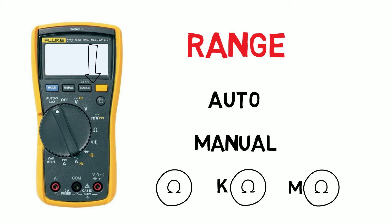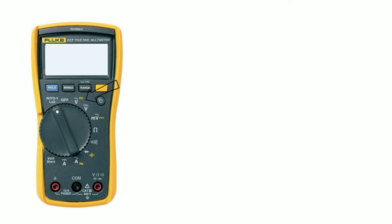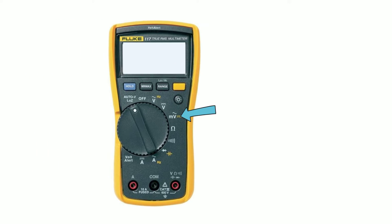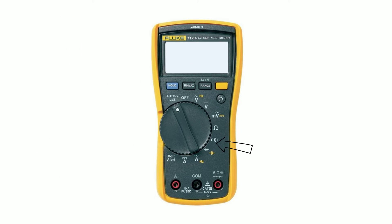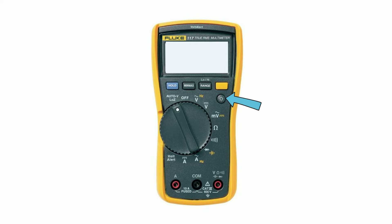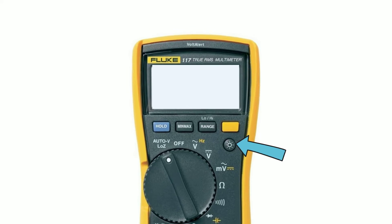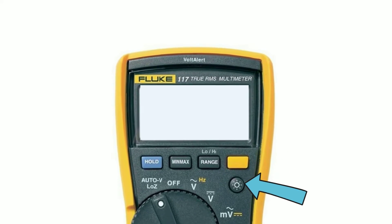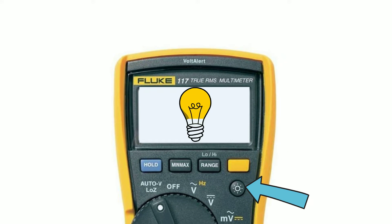The yellow button is used to give alternative function. If you look at the selector dial you'll notice certain symbols are in yellow — the yellow button allows you to utilize these functions. The lamp button will give you a backlight to the display, perfect for working in cabinets that may not have decent lighting.